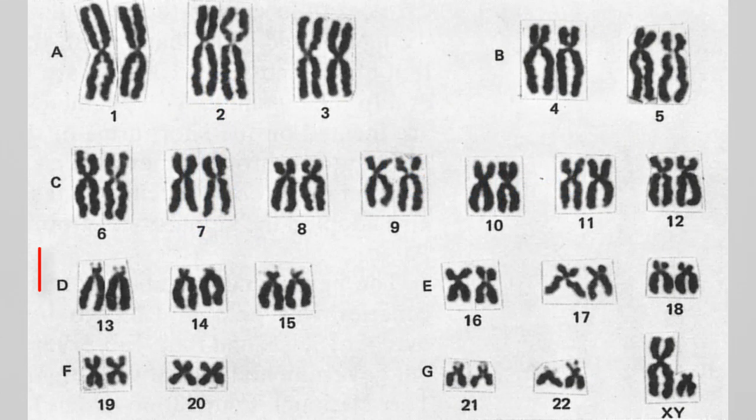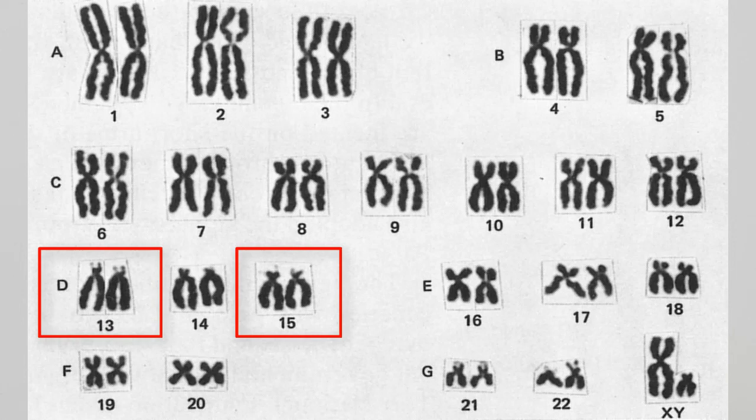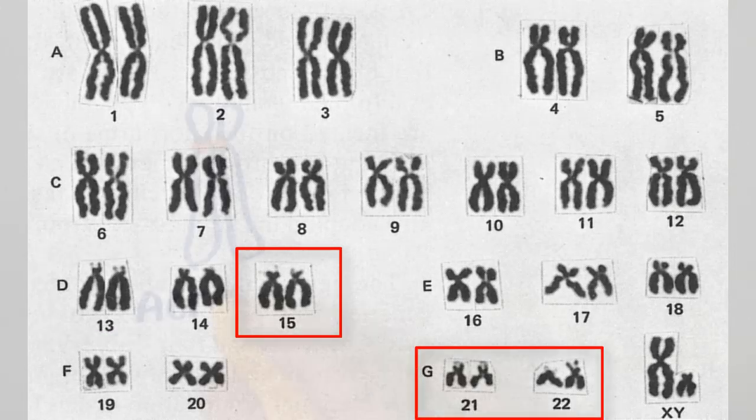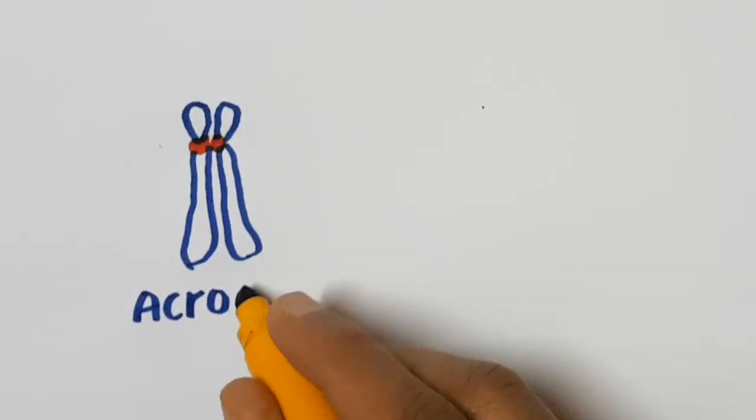Human chromosomes 13, 15, 21, and 22 are acrocentric chromosomes.